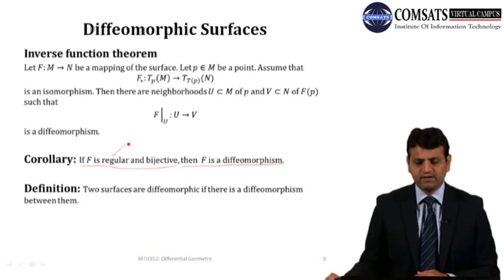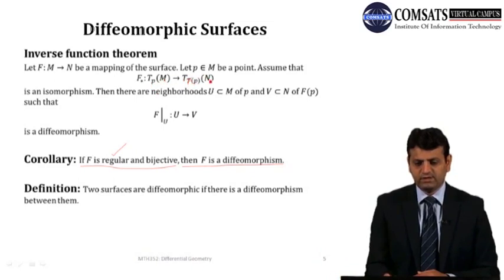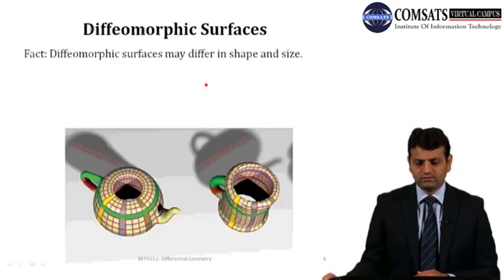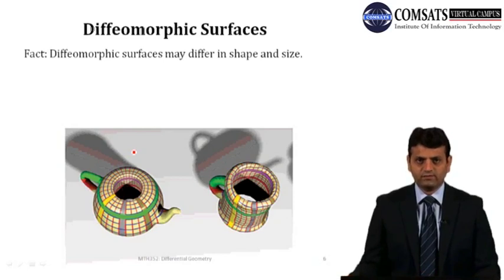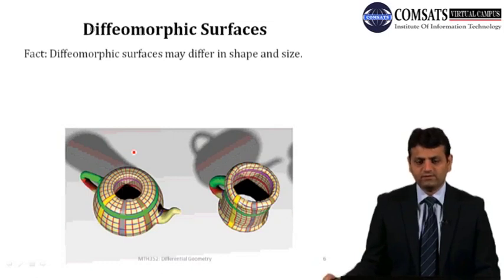Regular means that at each and every point, the tangent space is isomorphic to its image under F. So basically, T_p(M) is isomorphic to T_{F(p)}(N). Diffeomorphic surfaces may differ in shape and size. If two surfaces are diffeomorphic, it is possible that one is small and the other is bigger — even of infinite size — and their shapes can be very different. Diffeomorphism is a very special kind of map.